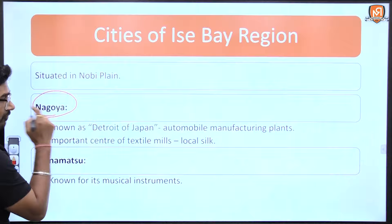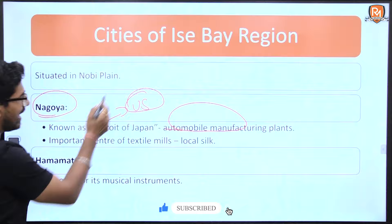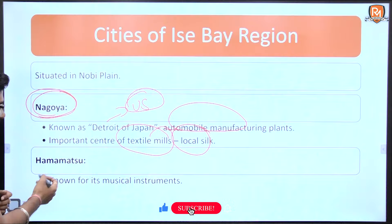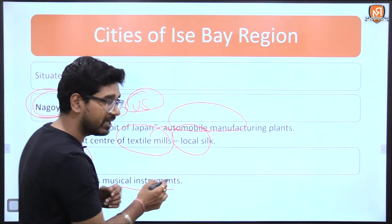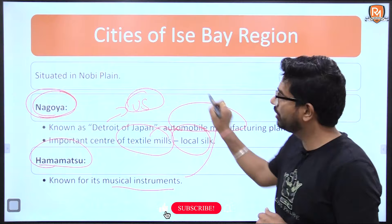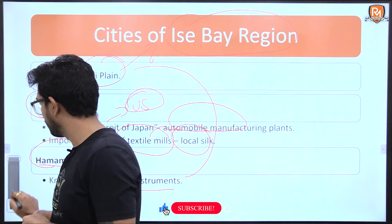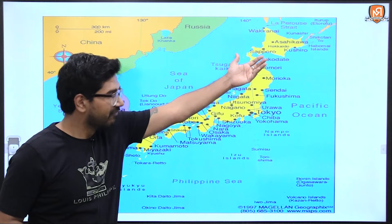The next important city is Nagoya, known as the 'Detroit of Japan' — just as Detroit in the USA is famous for automobiles, Nagoya is also famous for automobile industries. It is also notable for textile industries, especially local silk. Another important city is Hamamatsu, known for musical instruments. These cities are situated in the Nobi Plains, near the East Bay region.